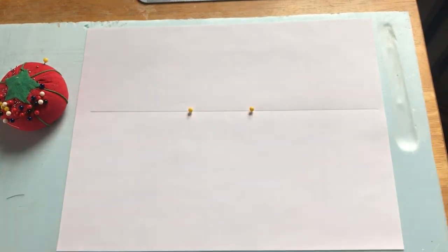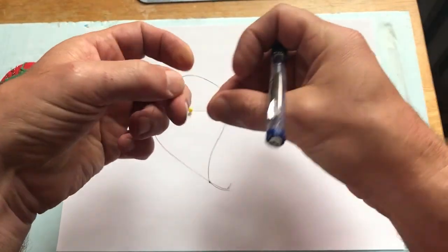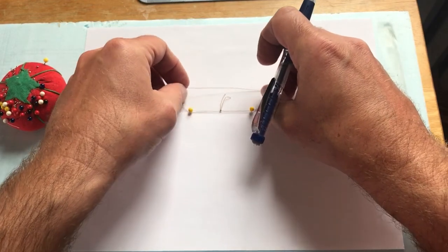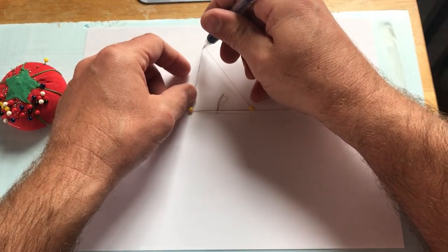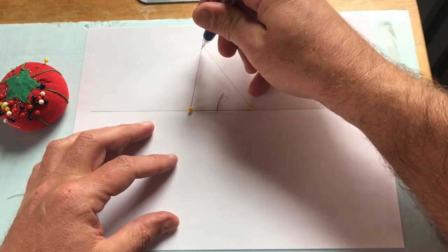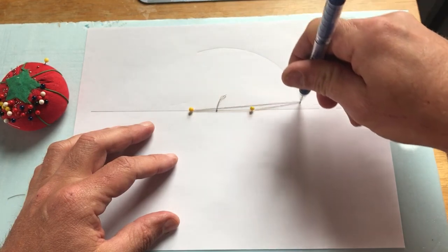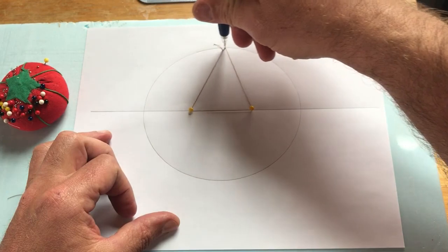And then we're going to use some string. I've taken the liberty of tying a string, it's just a loop. Hopefully you can do similarly. And if we place that string around our two pins and place a pencil in there, we can draw an ellipse just by tracing that the whole way around.